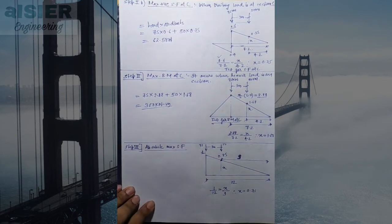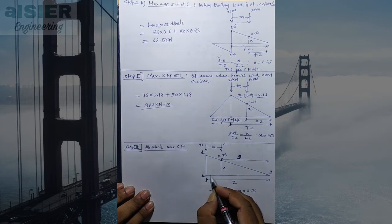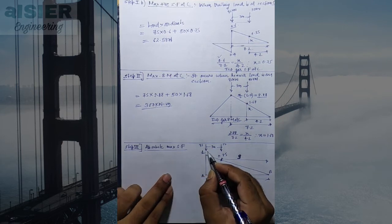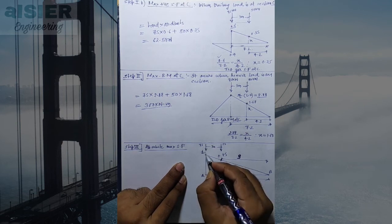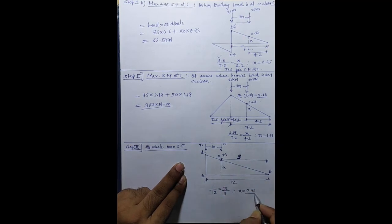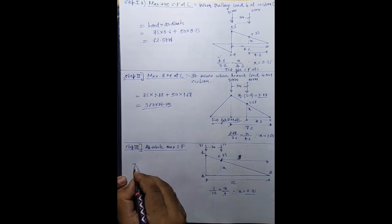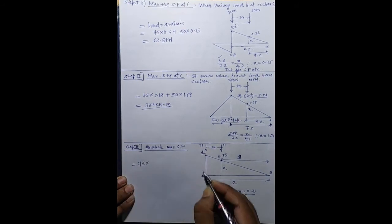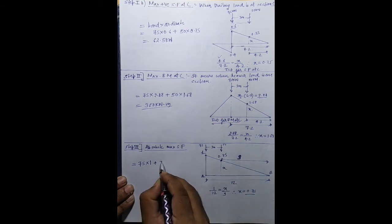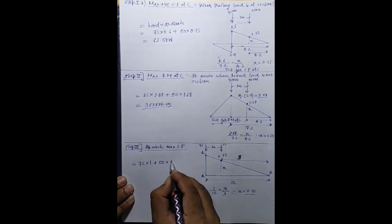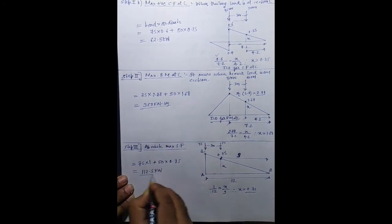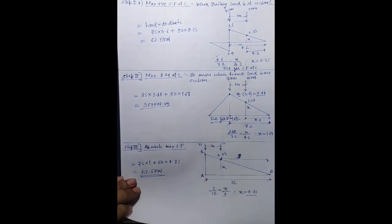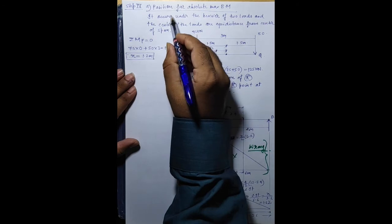Now we calculate the absolute maximum shear force. For this we need the ILD for reaction RA, where the ordinate at A is 1. When the trailing load (75 kN) is at A, the ordinate under the 50 kN load (3 m from A on a 12 m span) is calculated using triangle similarity as 0.75. Absolute maximum shear force = (75 × 1) + (50 × 0.75).